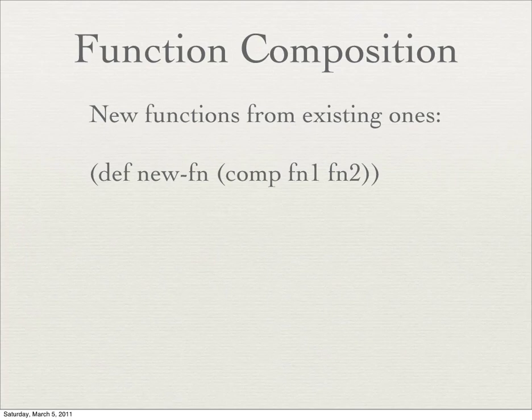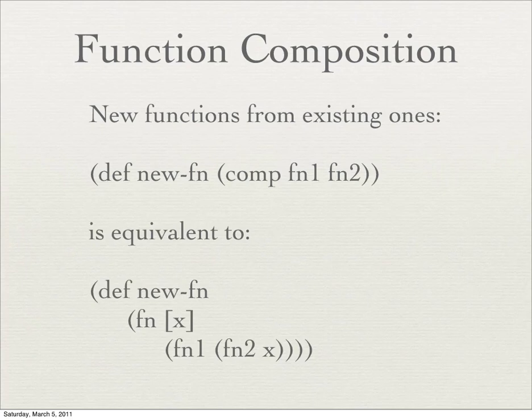Function composition: the basic idea is that you have two functions, fn1 and fn2, and you want to make a new function out of them. In Clojure, you use the comp function, which takes those two functions and produces a third function. 'def' is just assigning that new function to the symbol 'new-fn'. The new function accepts one parameter, which is passed to fn2 first. fn2 produces a result, that result gets fed as input to fn1, and fn1 produces the output. That's all function composition is.